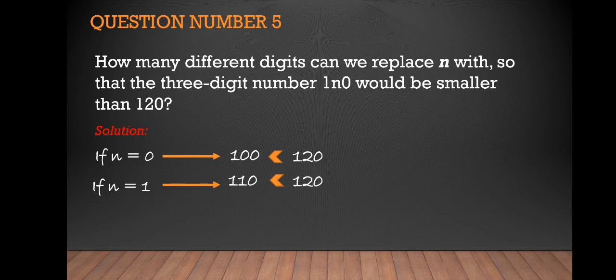Okay, next: if n equals 2, that would be 120. No, because they are equal, which means we won't continue placing numbers. If at 2 they're already equal, it's not less than 120. What more if we try 3, 4, 5, 6, and so on up to 9?